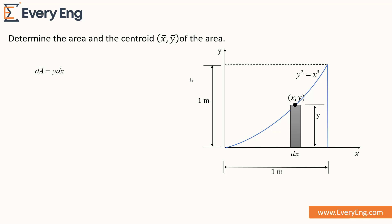We can get the value of y by using the equation of the curve y² = x³, which gives y = x^(3/2). We can put this value into the elemental area equation, then take the integration from limits 0 to 1.